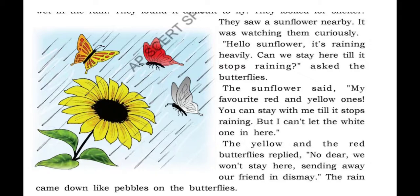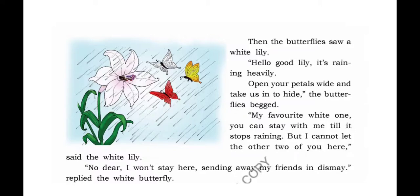The rain came down like pebbles on the butterflies. Then the butterflies saw a white lily. Hello, good lily, it's raining heavily. Open your petals wide and take us in to hide, the butterflies begged. My favorite white one, you can stay with me till it stops raining, but I can't let the other two in, said the white lily. It is also a selfish one. No dear, I won't stay here, sending away my friends in dismay, replied the white butterfly. The three butterflies are the best friends.